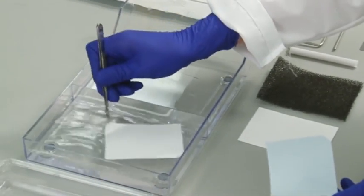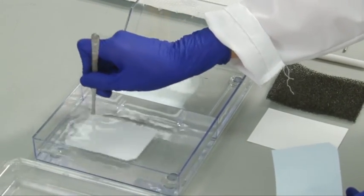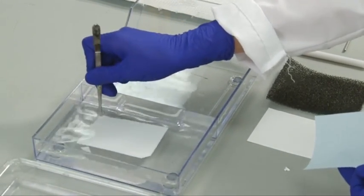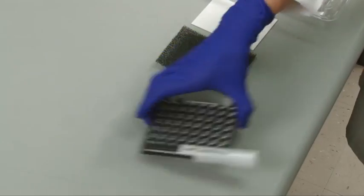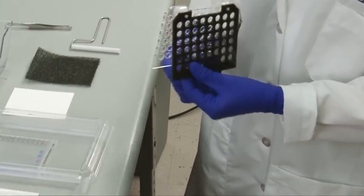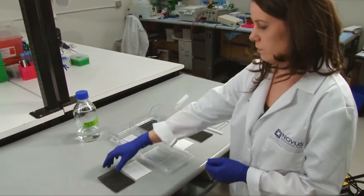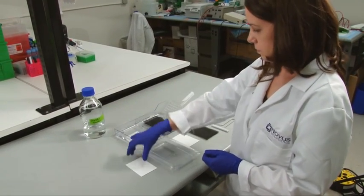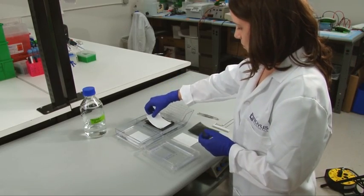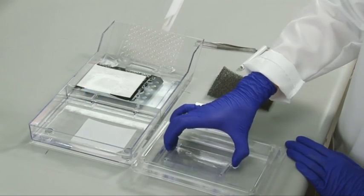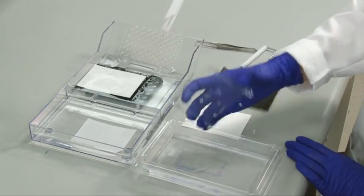Create a stack by placing the following components from the black negative cathode to the red positive anode: sponge, filter paper, gel, membrane.